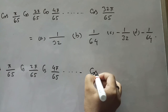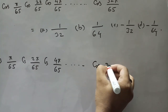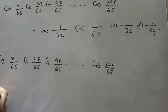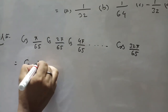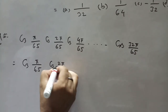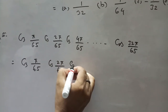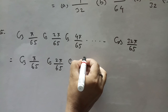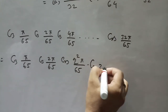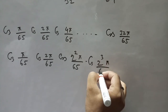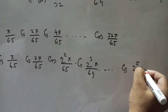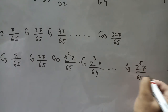The terms are: cos(π/65), cos(2π/65), cos(2²π/65), cos(2³π/65), and the last term is cos(2⁵π/65) which equals cos(32π/65).